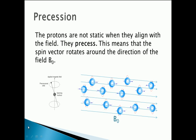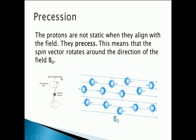Not only do the protons align in those two states, but the spin vector also precesses around the magnetic field direction. We can see the nucleus spinning, with the spin vector not aligning perfectly with the applied magnetic field — it's rotating around the magnetic field vector. This effect is called precession, and we say that the protons are precessing around the direction of the external magnetic field.